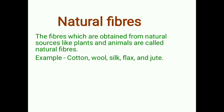First we will study about the natural fibers. The fibers which are obtained from natural sources like plants and animals are called natural fibers. Examples are cotton, wool, silk, and jute. Cotton and jute are natural fibers obtained from plants, whereas wool and silk are natural fibers obtained from animals. Wool is most commonly obtained from sheep, and silk fiber is obtained from the silkworm.